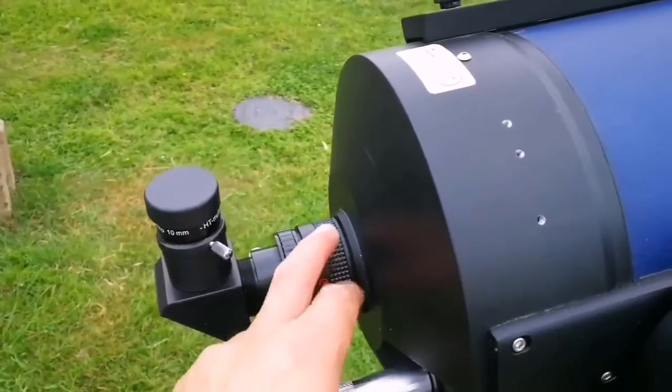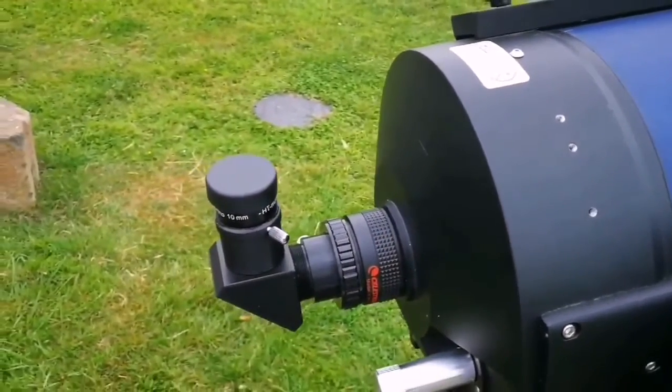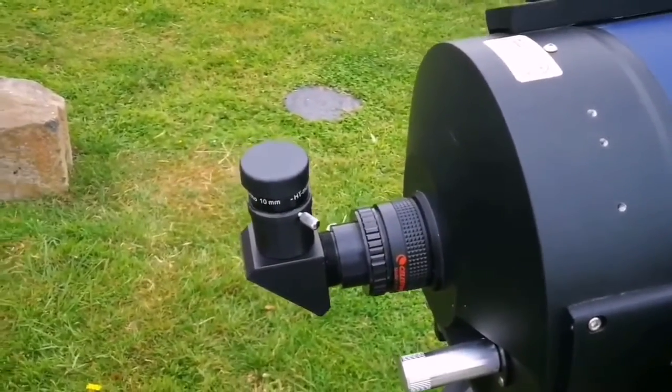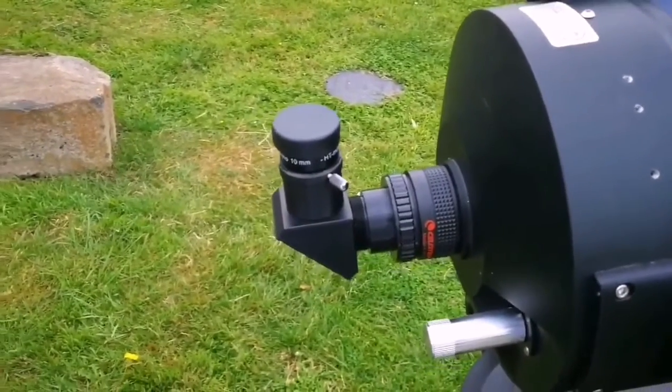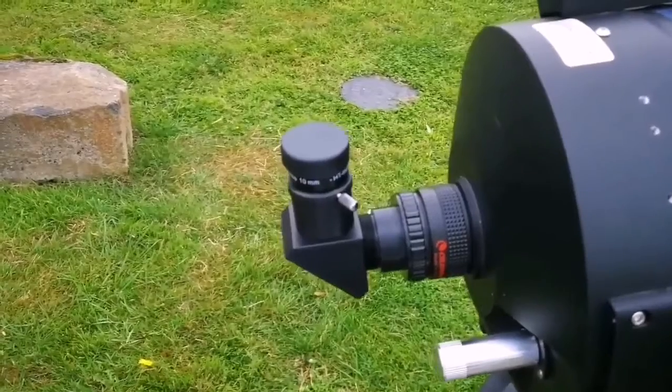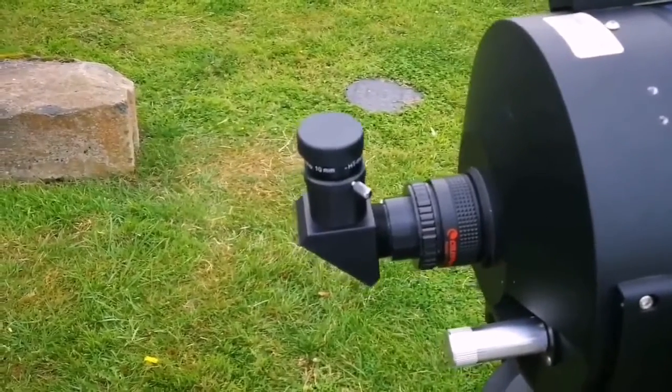This focal reducer actually made the field of view wider. So when I'm looking at the faint fuzzies which are big, can be up to 2-3 degrees in the case of the Andromeda galaxy,